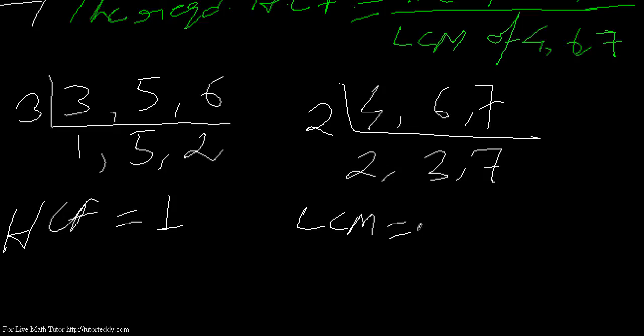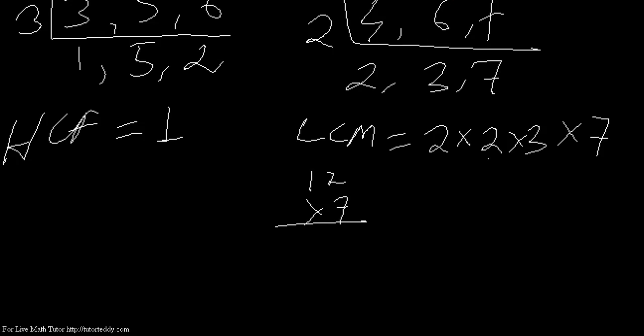2×2×3×7. That means 2×2 is 4, 4×3 is 12, and 12×7 is - 7×2 is 14, carry 1, 7×1 is 7 plus 1 is 8, so 84.